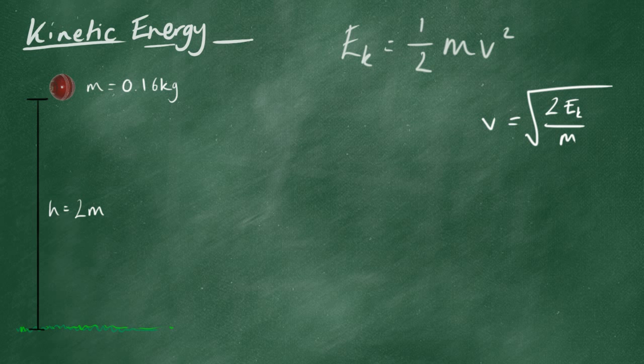Well, okay. Well, that means that what we're saying is that all of the gravitational potential energy it had at the start is going to be converted to kinetic energy when it finally hits the ground. So, the first thing to do is to work out the gravitational potential energy it has.